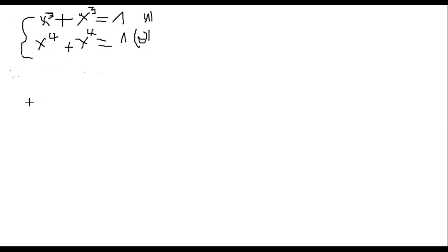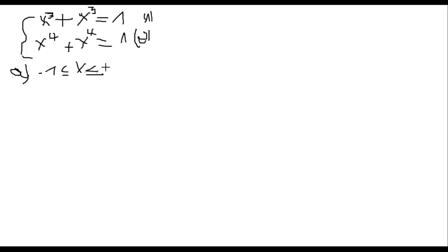We are solving a system of equations in x and y. We need to find all real pairs of numbers x and y satisfying both equations one and two. First of all, we observe that x is between negative one and one, and in the same manner y is between negative one and one.